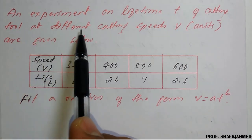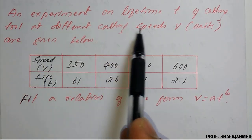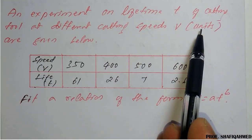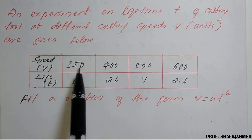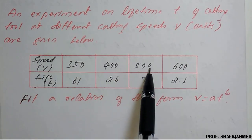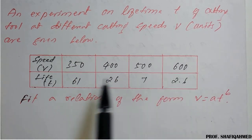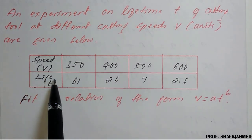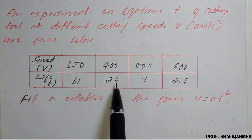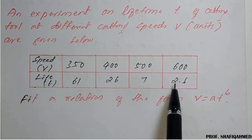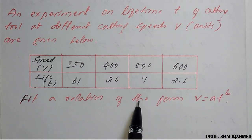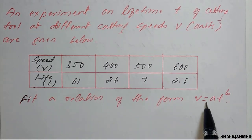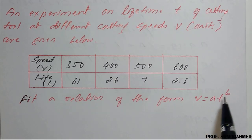A cutting tool operates at different cutting speeds V with values 350, 400, 500, and 600 units. The corresponding tool life times T are 61, 26, 7, and 2.6. We need to fit a relation of the form V = A · T^x to this data.